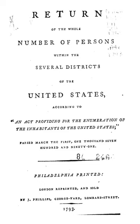Census data included the name of the head of the family and categorized inhabitants as follows: free white males at least 16 years of age to assess the country's industrial and military potential; free white males under 16 years of age; free white females; all other free persons reported by sex and color; and slaves.